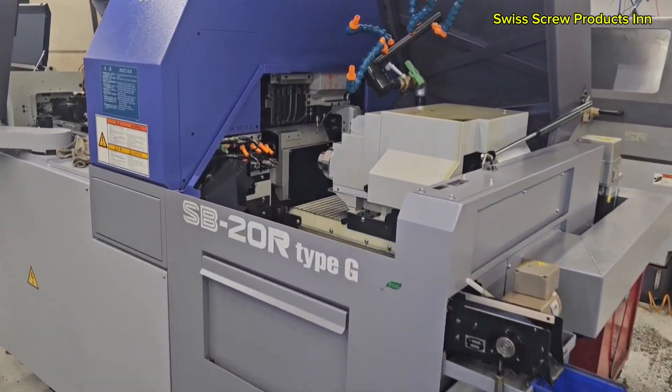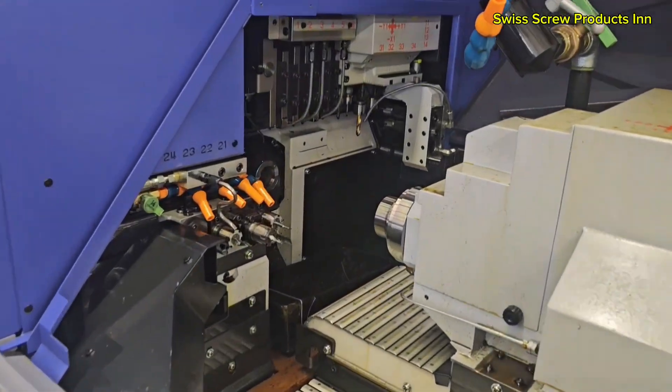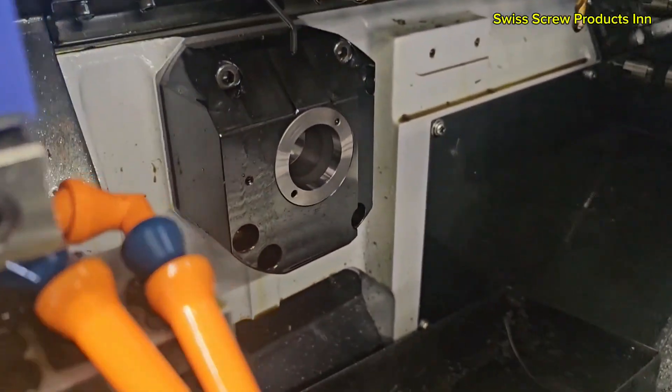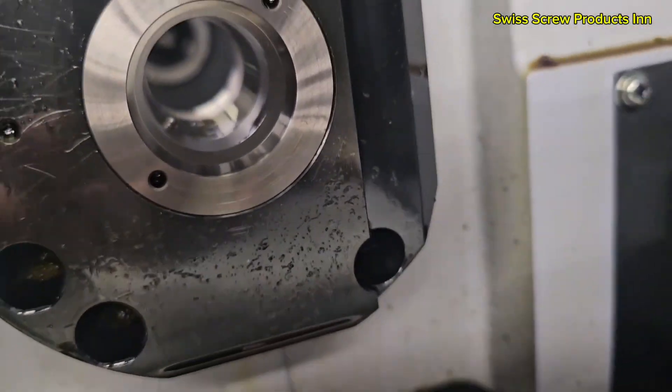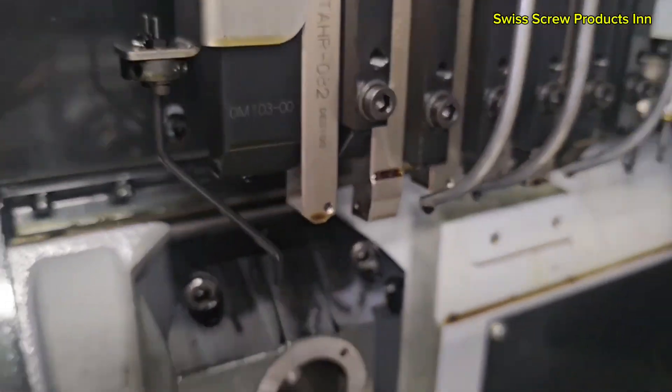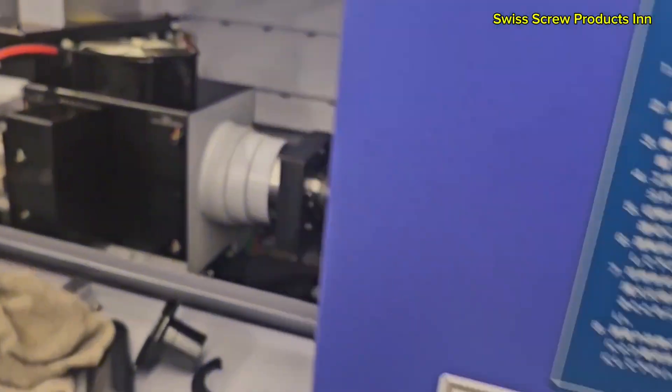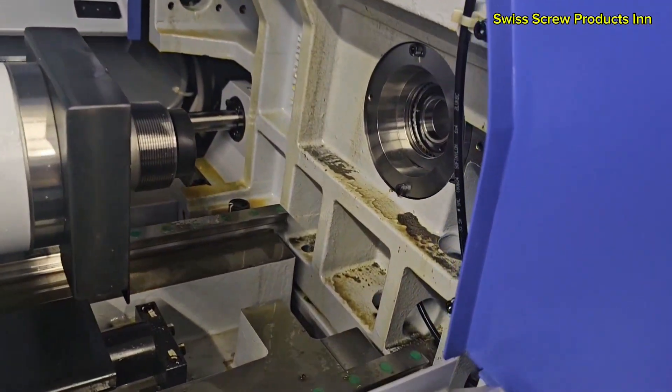A Swiss screw machine, also known as a Swiss-type lathe or Swiss automatic, is a specialized CNC machine designed for high-precision turning of small, long, and complex parts.